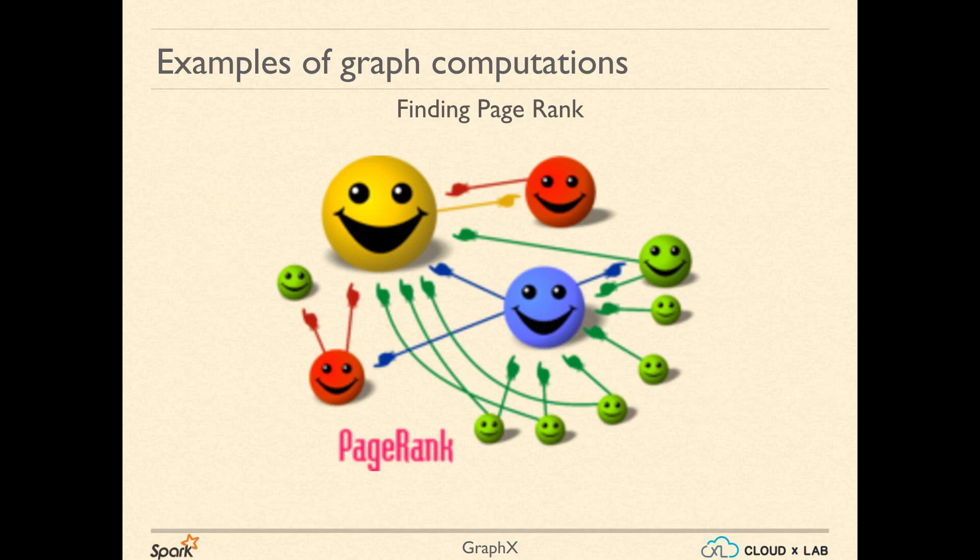The graph is generally represented as a table of vertices and edges. In case of web pages, the vertices represent the pages and edges represent the hyperlinking. Since there are billions of web pages, Google needed a MapReduce kind of infrastructure to do the PageRank computation.